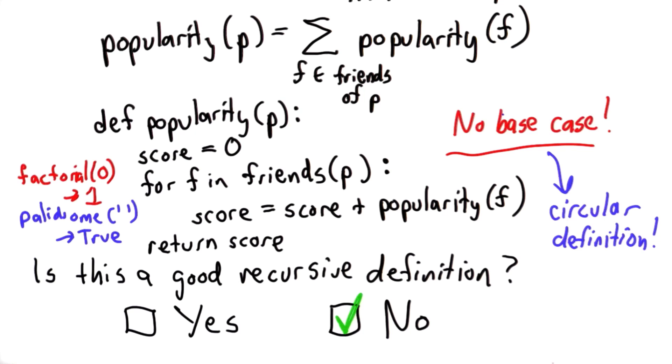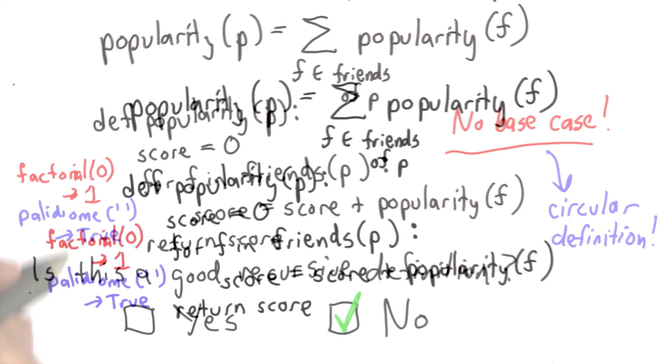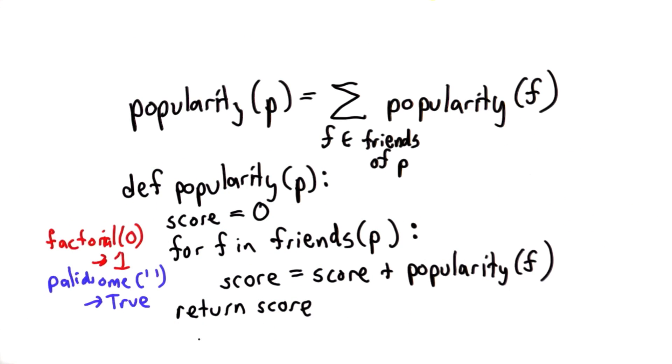We don't have one here. So let's try to invent one. Let's suppose that we made our base case. So if we're going to fix this, what we need to do is invent a base case. Maybe that will solve our problem. So let's try and add a base case.